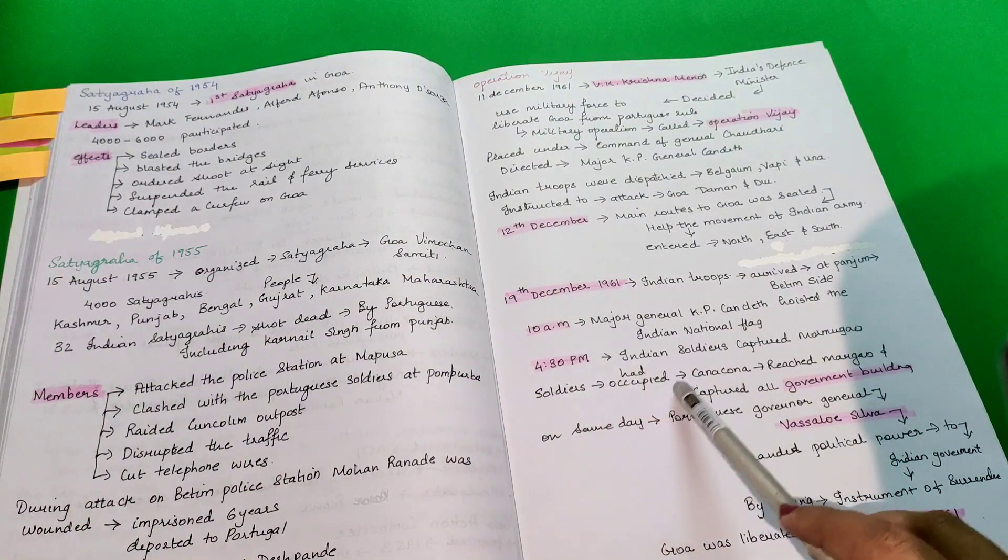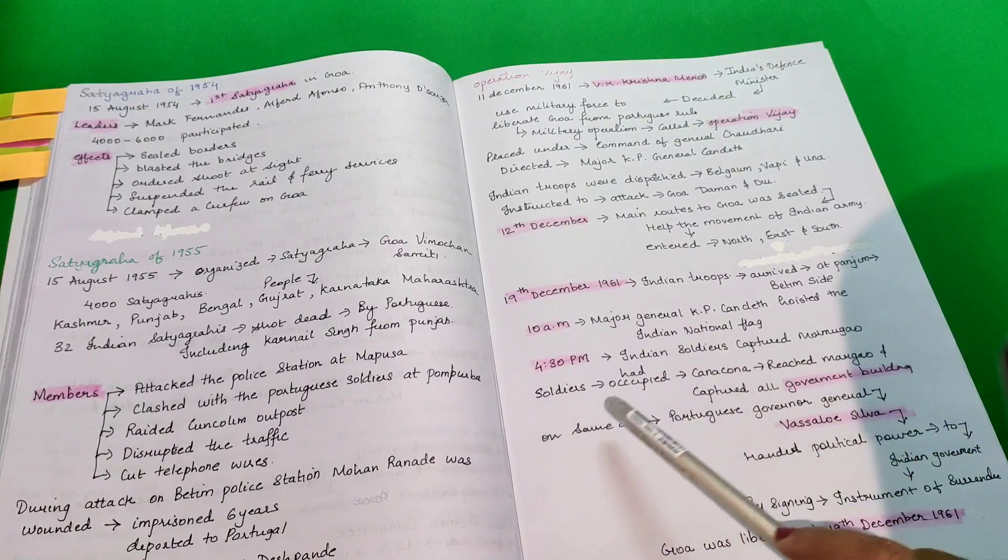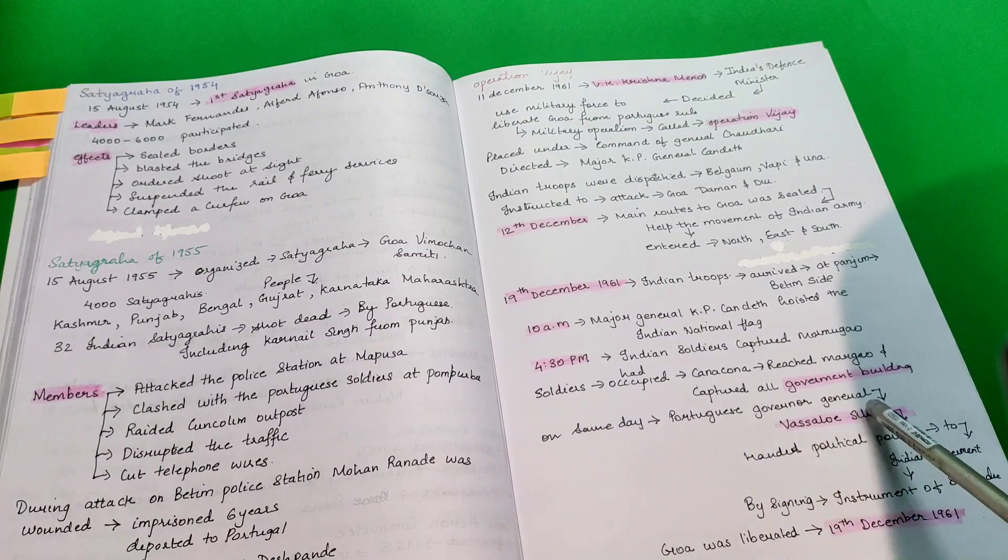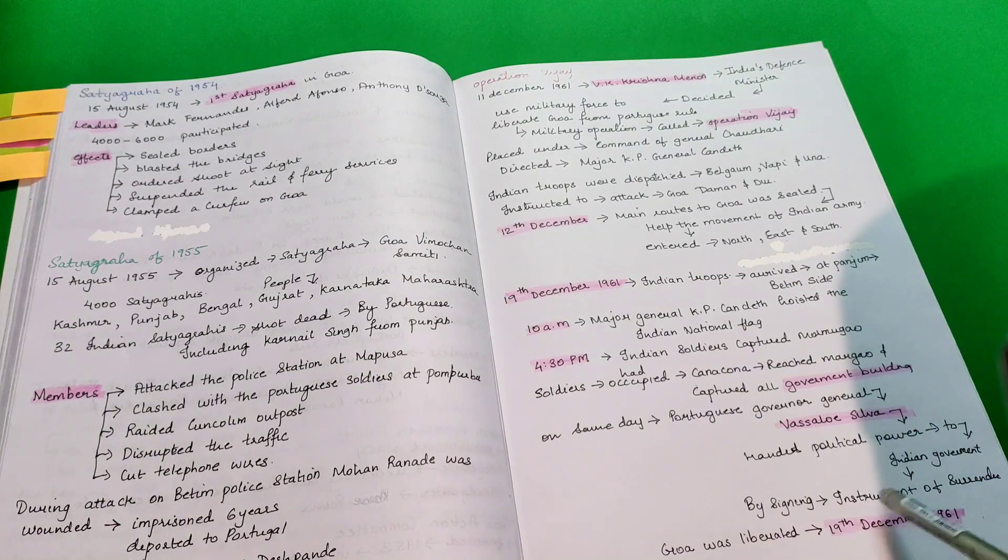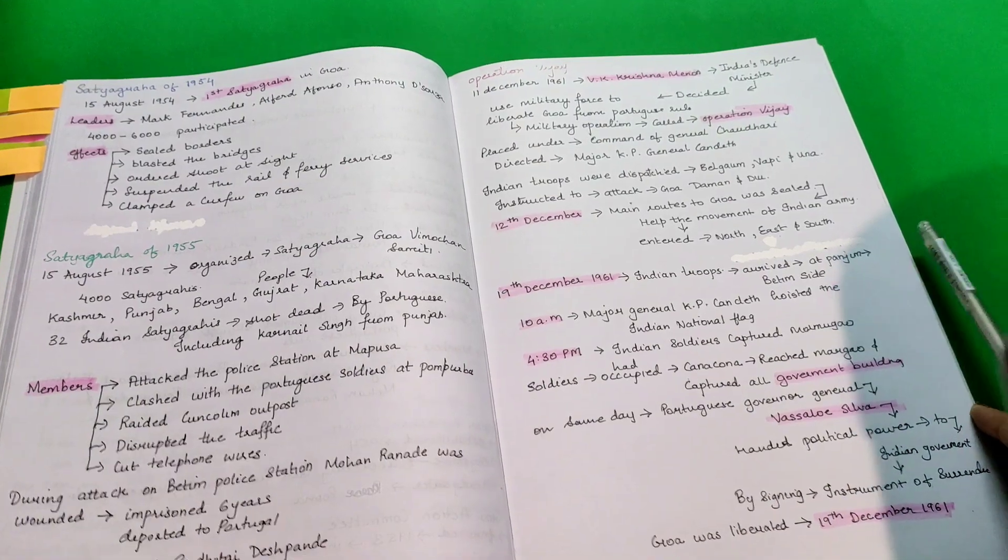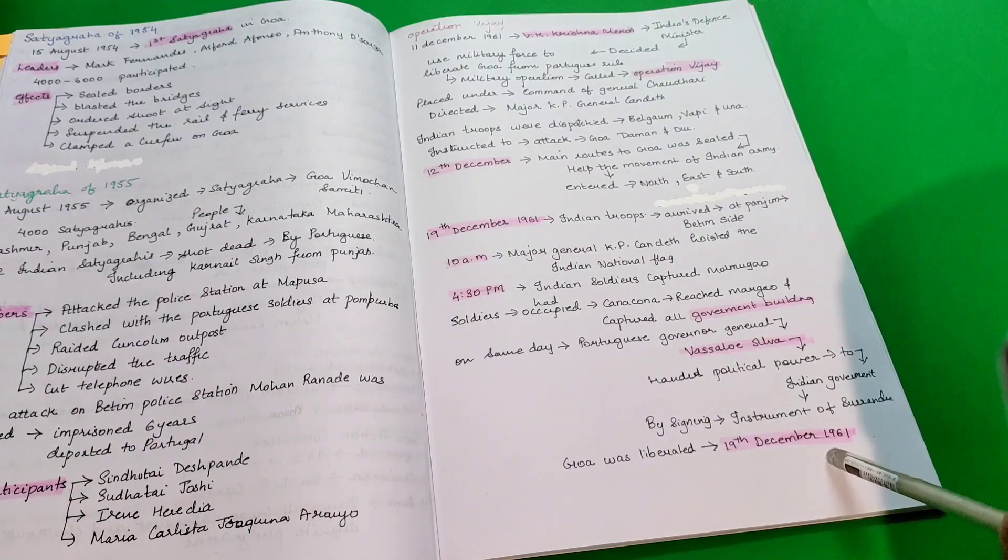Soldiers had occupied Canacona, reached Margao and captured all government buildings. And on the same day, Portuguese governor-general Vascalo Silva handed political power to Indian government by signing instruction of surrender. And Goa was liberated on 19 December 1961.